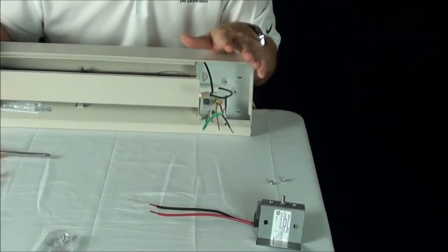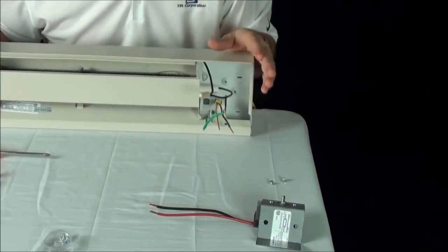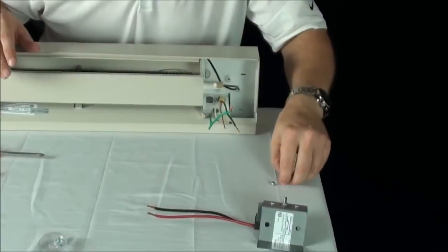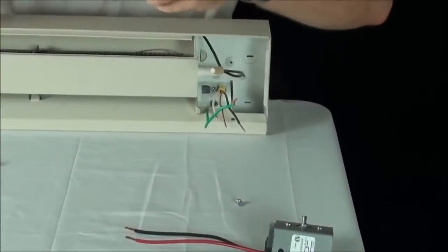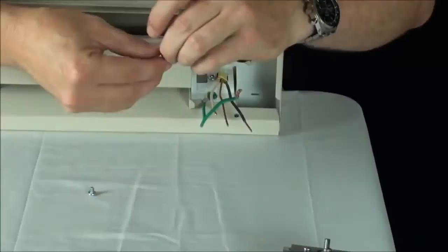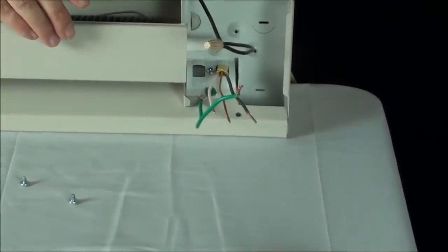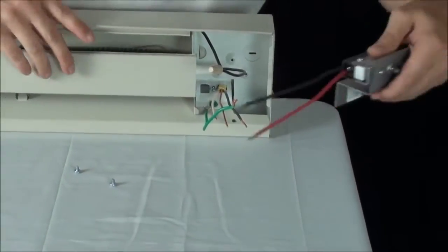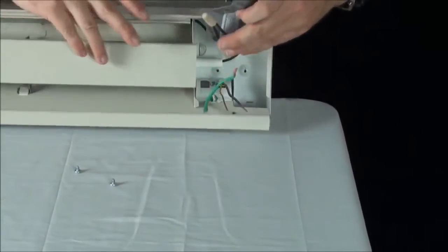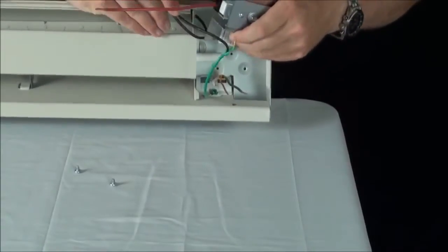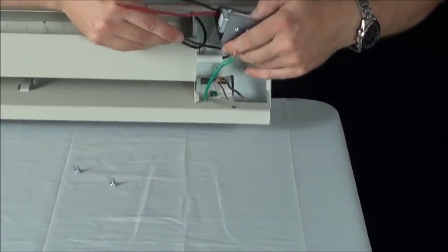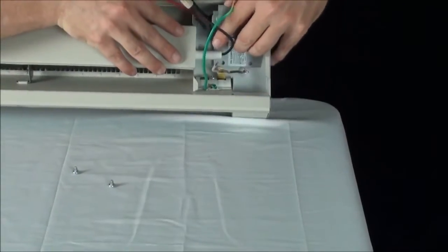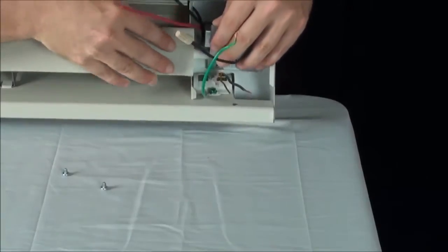Today we're going to hook up a single pole thermostat to a 2900 series TPI baseboard heater. First thing you want to do after you have your heater installed and the power wire coming to your heater, you want to install your thermostat by sliding it behind the protruding part of the element. You will have two mounting screws that come with the thermostat.